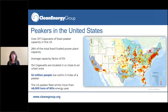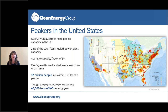This is a map of peakers in the United States — you can see how they're spread across the country and near population centers. There are over 217 gigawatts of fossil peaker capacity in the U.S. — 28% of total fossil power plant capacity, or almost a third, are peaker plants. That is why they are so important. Their average capacity factor is really around 5%, so this is a lot of plant and emissions that don't run all that often, which is why they are ripe for replacement. On this map, the size of the dot indicates the plant size in megawatts, and the color indicates how little it runs — the more red, the less it runs.